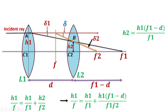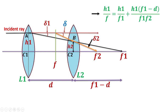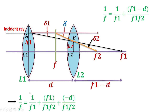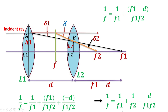Substituting H2 equals H1(F1 minus D)/F1 into H1/F equals H1/F1 plus H2/F2, and cancelling H1 throughout, we get: 1/F equals 1/F1 plus (F1 minus D)/(F1 times F2). Separating the terms gives 1/F equals 1/F1 plus 1/F2 minus D/(F1 times F2). This is the equivalent focal length formula for two thin lenses separated by distance D.